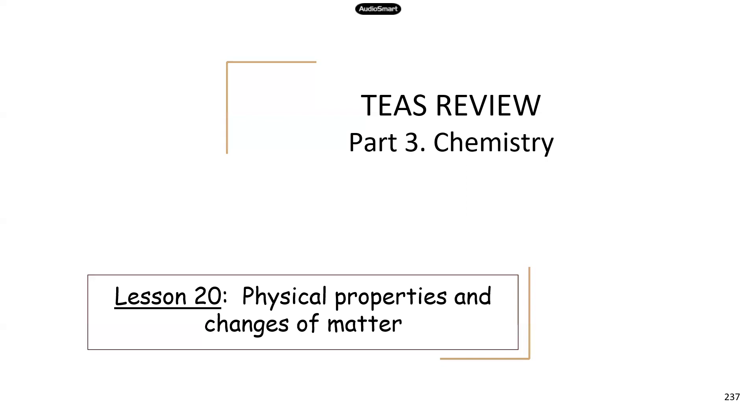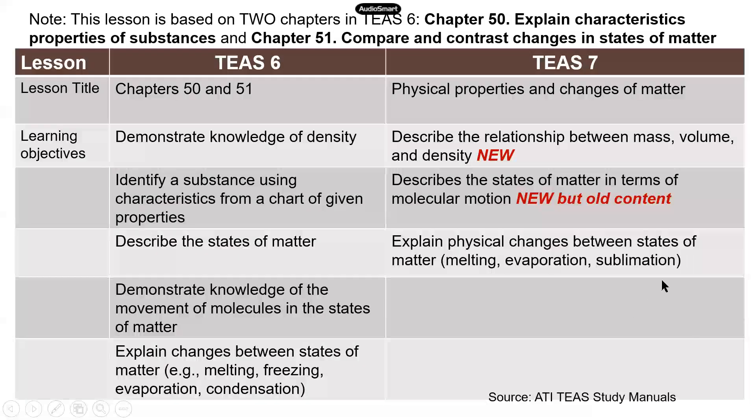So we're going to go over some of the updates and changes in TEAS 7. As usual, this is a comparison between TEAS 6 and TEAS 7. I have a note here. This lesson is based on two chapters in TEAS 6. There is some reorganization in TEAS 7. The two chapters are chapter 50, explain characteristics and properties of substances, and 51, compare and contrast changes in states of matter.